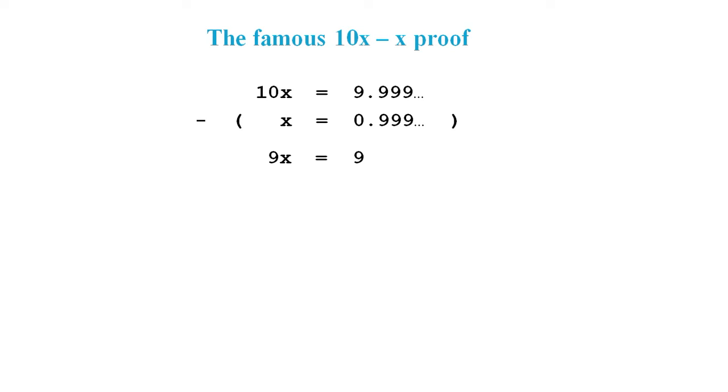We divide throughout by 9 and we end up with x equals 1. And since we started off with x equals 0.9 recurring, we appear to have proved that 0.9 recurring equals 1.